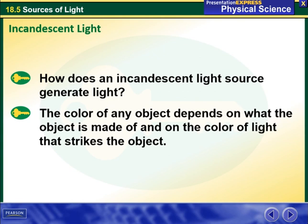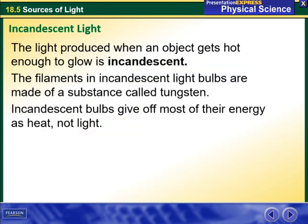The color of any object depends on what the object is made of and on the color of the light that strikes the object. The light produced when an object gets hot enough to glow is incandescent. The filament in incandescent light bulbs is made of a substance called tungsten.